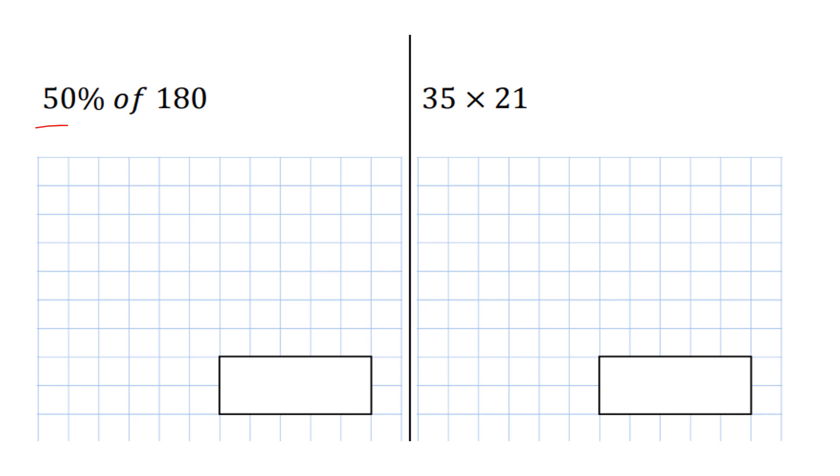Find 50% of 180. 50% just means half of it, so half of 180 is 180 divided by 2. 18 divided by 2 is 9, and then add on the 0, and we get 90.